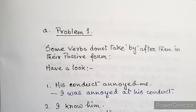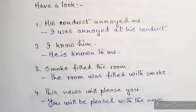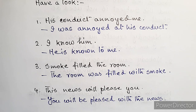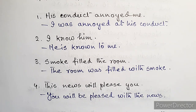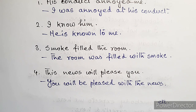While changing the voice of these types of sentences we sometimes face problems. Problem one: some verbs do not take 'by' after them in their passive form. For example, 'His conduct annoyed me' becomes 'I was annoyed at his conduct' — 'annoyed' takes 'at,' not 'by.' 'I know him' becomes 'He is known to me' — 'know' takes 'to.' 'Smoke filled the room' becomes 'The room was filled with smoke.' And 'This news will please you' becomes 'You will be pleased with the news.'